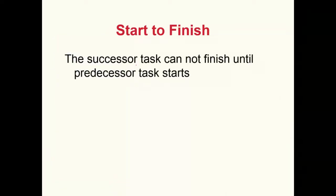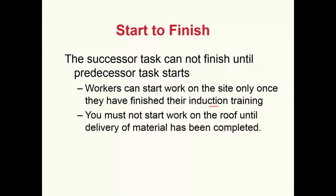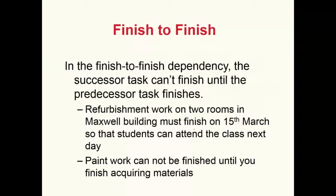The start-to-finish relationship means the successor task cannot finish until the predecessor task starts. Examples: workers can start on site only once they have finished their induction training; you must not start work on the roof until delivery of materials is completed. The finish-to-finish dependency means the successor task cannot finish until the predecessor task finishes — for example, refurbishment work on two rooms must finish by March 15th so students can attend class next day, or paintwork cannot be finished until material acquisition is complete. Finish-to-start and start-to-start are the most common, but these two other types are also important.